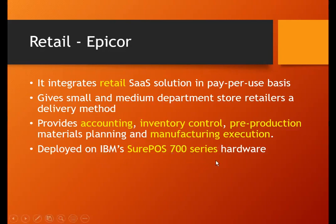The IBM SurePOS 700 is a thin client — meaning there is no physical hard disk available in that machine. Because this software is a SaaS product, everything is hosted on the cloud on the client or cloud side. They just need a computer that will get connected to the cloud interfaces.